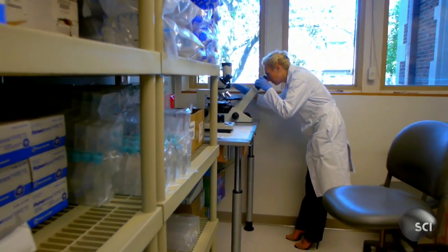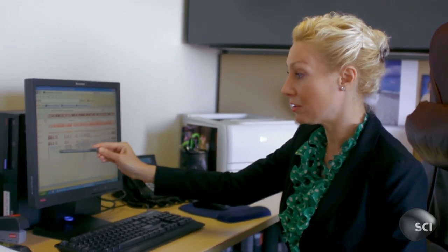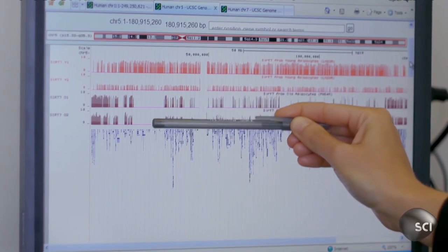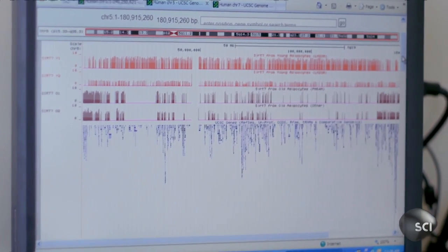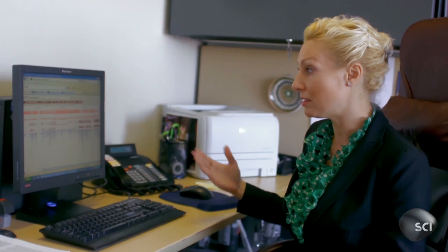The young cells, the red, there is sirtuin 7 binding in areas where there are not many genes and in this same area this protein is depleted in older patients so it's lost in those regions and this is true across all of the chromosomes that we've looked at.